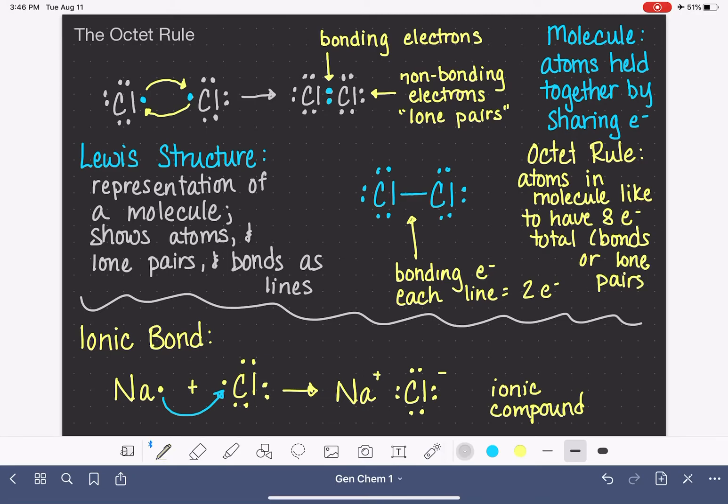So if we look at this Cl2 Lewis structure, if we look at each one of the chlorine atoms and we ask ourselves how is the octet rule for this particular molecule satisfied? If we look at this chlorine atom, we can see that it has one, two, three, four, five, six, seven, eight electrons around it. And our other chlorine atom also has one, two, three, four, five, six, seven, eight electrons. Because these electrons are being shared, they can be counted by both the atom on the left and the atom on the right in terms of satisfying the octet rule.